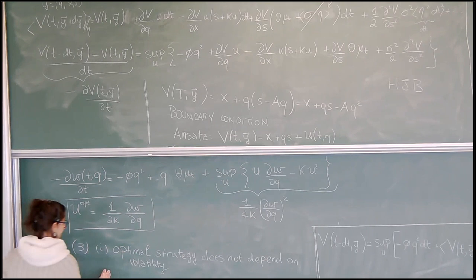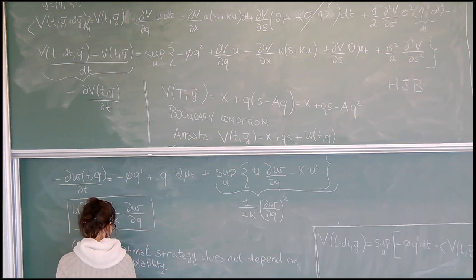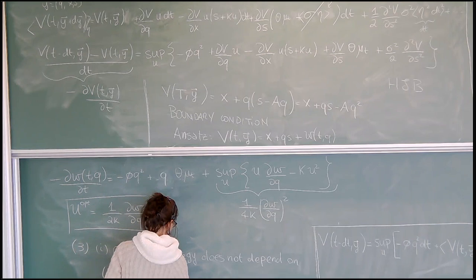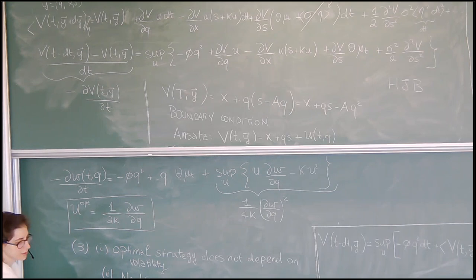So in this particular example, what we find is that our optimal strategy — the velocity — does not depend on what people call in the economics language the volatility, that is, the fluctuations of the price. The equation is nonlinear because you have a derivative squared, but it is first order in the derivative — there is no diffusion term. So it is a little bit simpler with respect to the one given in the lecture, and indeed we can solve for it explicitly.